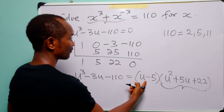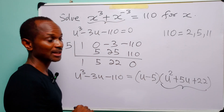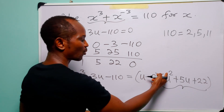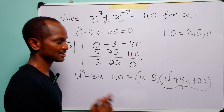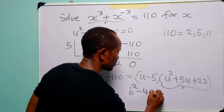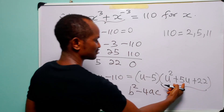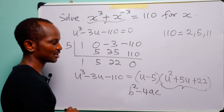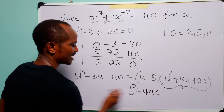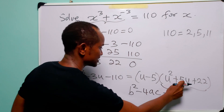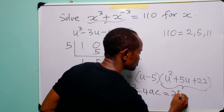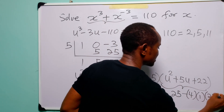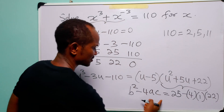We now check whether u² + 5u + 22 = 0 has any real roots using the discriminant b² − 4ac. Here b = 5, a = 1, c = 22, so b² − 4ac = 25 − 4(1)(22) = 25 − 88.